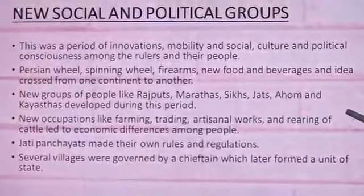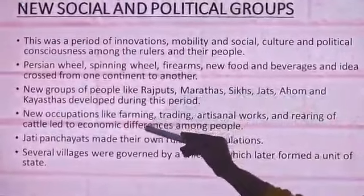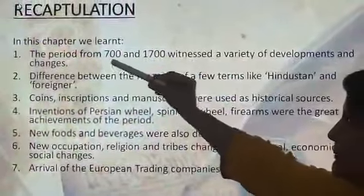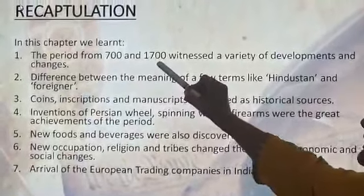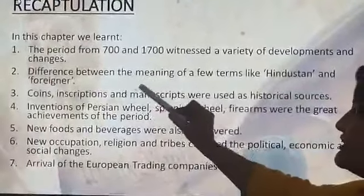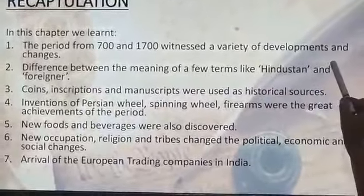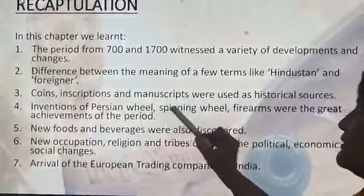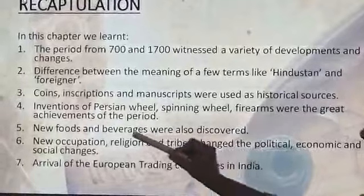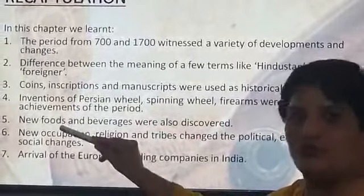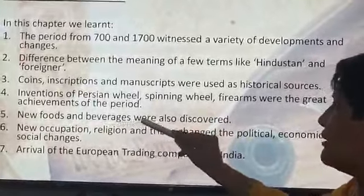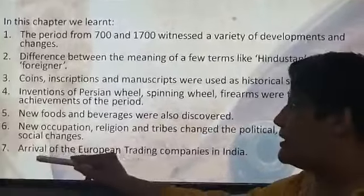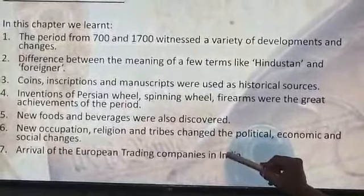Thus children, we have seen how many changes there were during this period of 700 to 1700 AD. To conclude this chapter: we read about the variety of developments and changes in that period; differences in the meaning of terms like Hindustan and 'foreign'; coins, inscriptions and manuscripts used as historical sources; invention of the Persian wheel, spinning wheel and firearms; new foods like potatoes, chillies and corn, and beverages like tea and coffee; new occupations, new religions and new tribes that changed the political and economic order; and the arrival of the European trading company, which made a great change during the period.